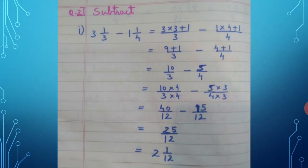Question 2: Subtract. Now, how to subtract? The steps are similar to addition. You first convert the mixed numbers to improper fractions, then subtract the two fractions you get. The only difference is the subtraction sign in between.